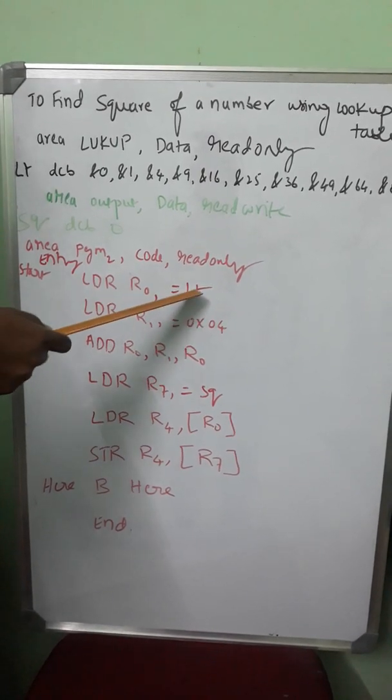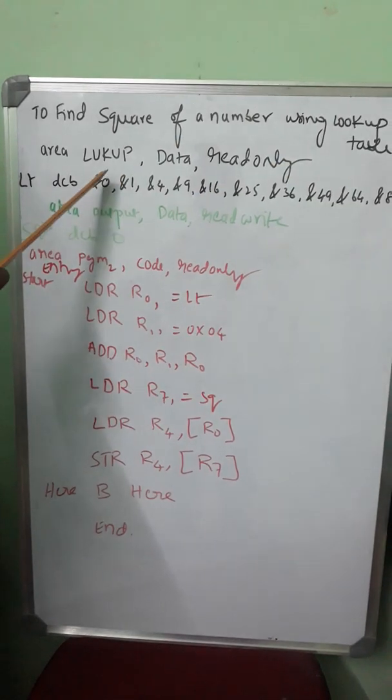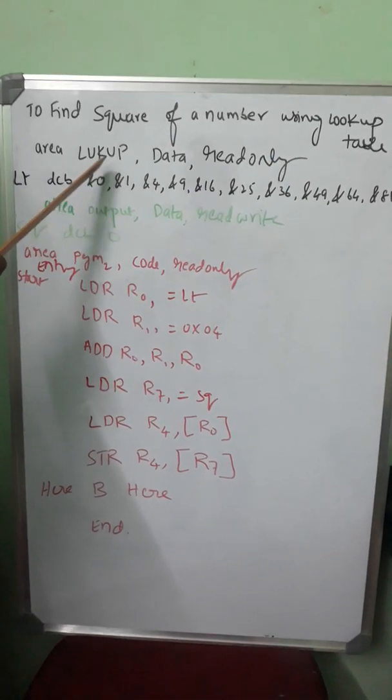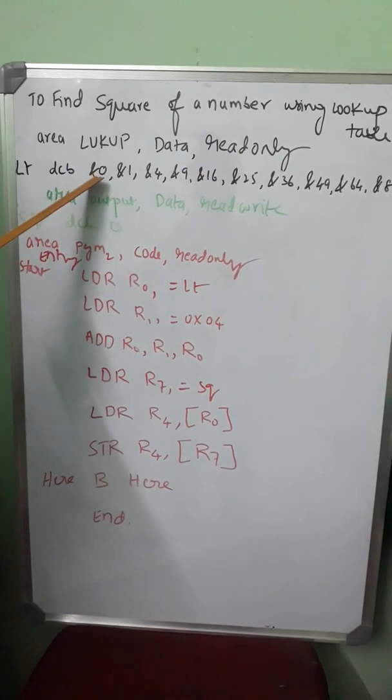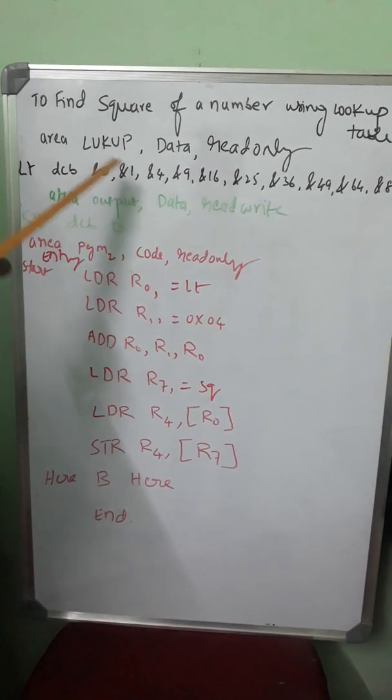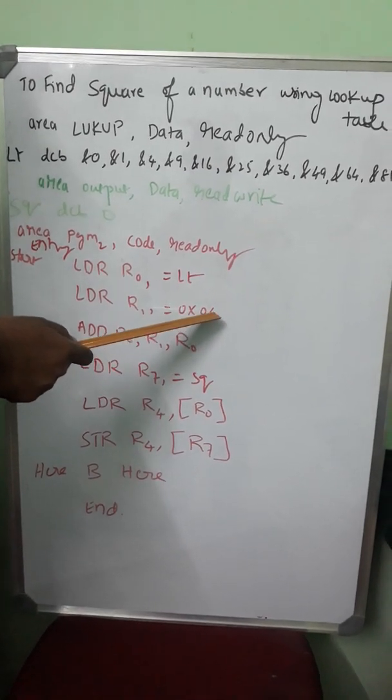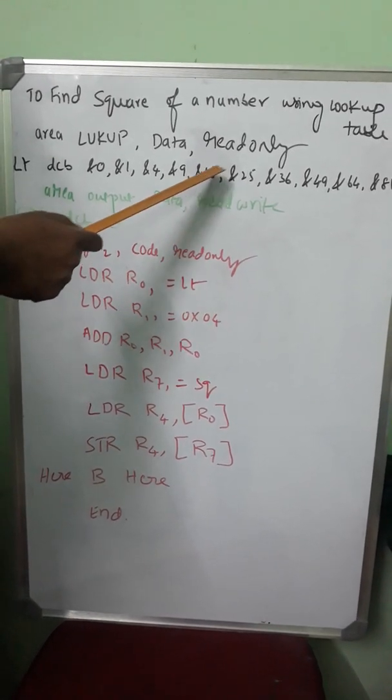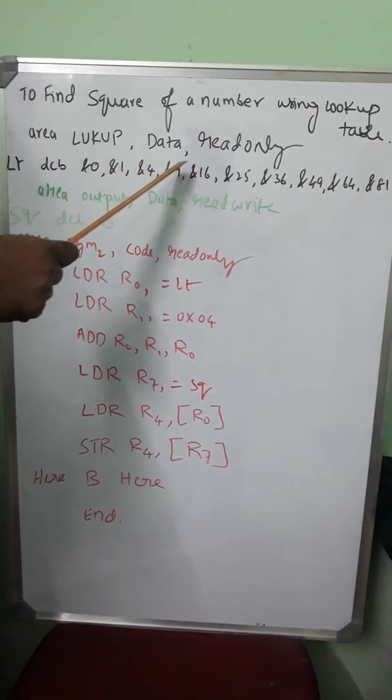Now R0 is pointing to LT, that means it is pointing to the lookup table first location, or in other words, 0th location, because array will always be indexed 0 as the first element. Then R1 has got the input, so I am going to find the square of 4, which is of course 16, already written in the position, namely 0, 1, 2, 3, 4th position.